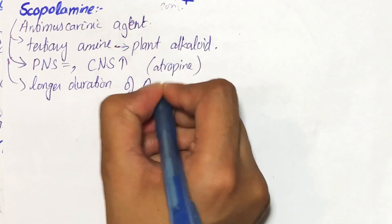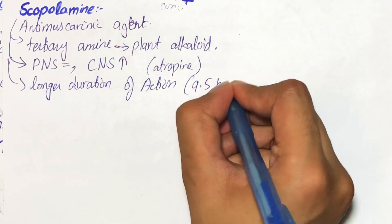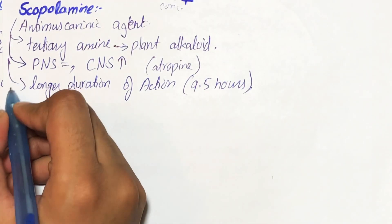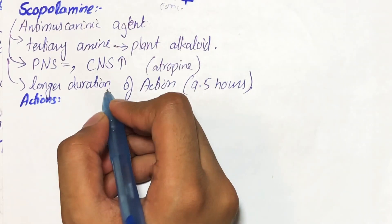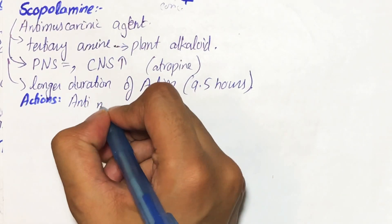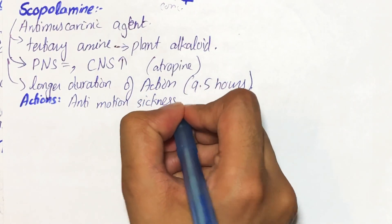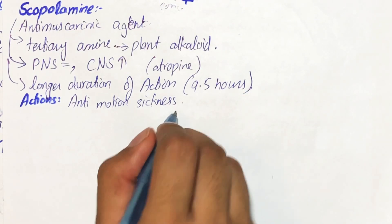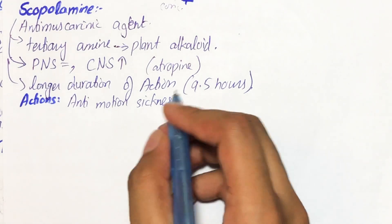It has longer duration of action as compared to atropine. Its duration of action is almost 9.5 hours. So if we talk about its actions on the body, scopolamine actually produces anti-motion sickness effects on the body.